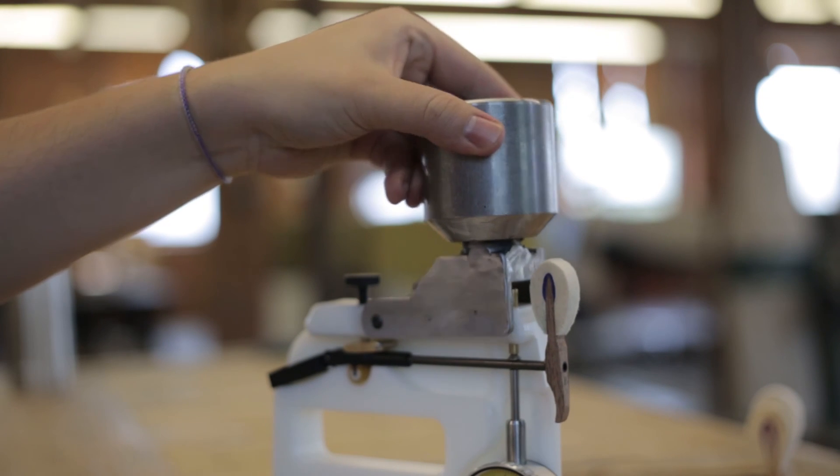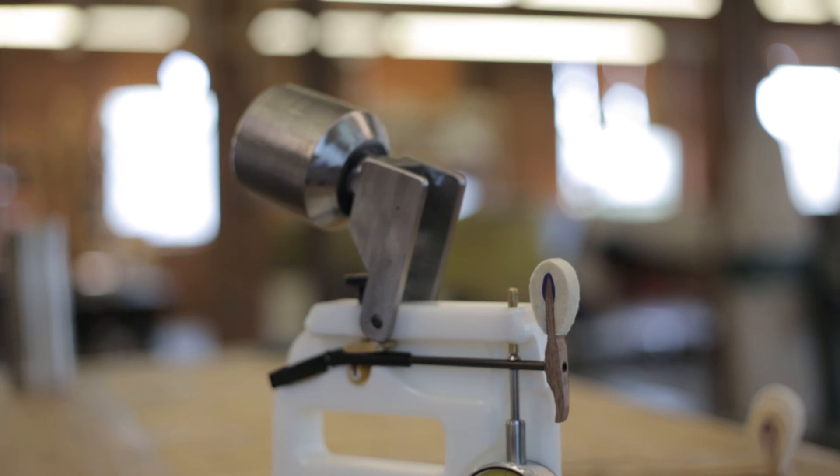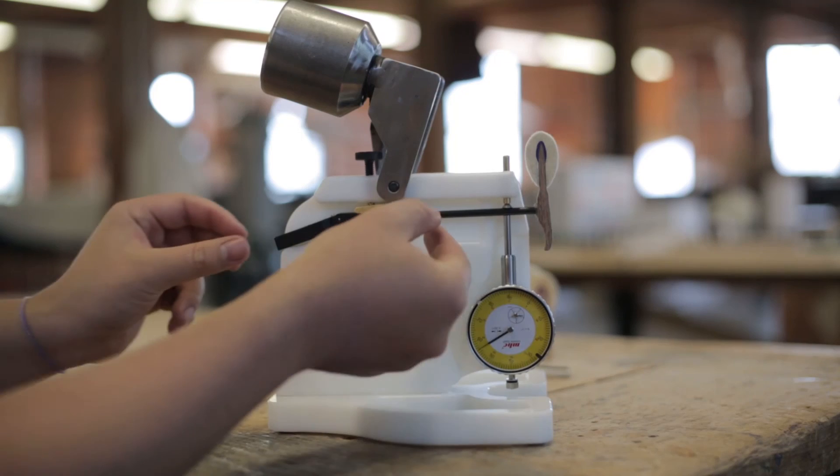To remove the shank from the gauge, bring the weight back to its resting position, loosen the thumbscrew, and then remove the shank.